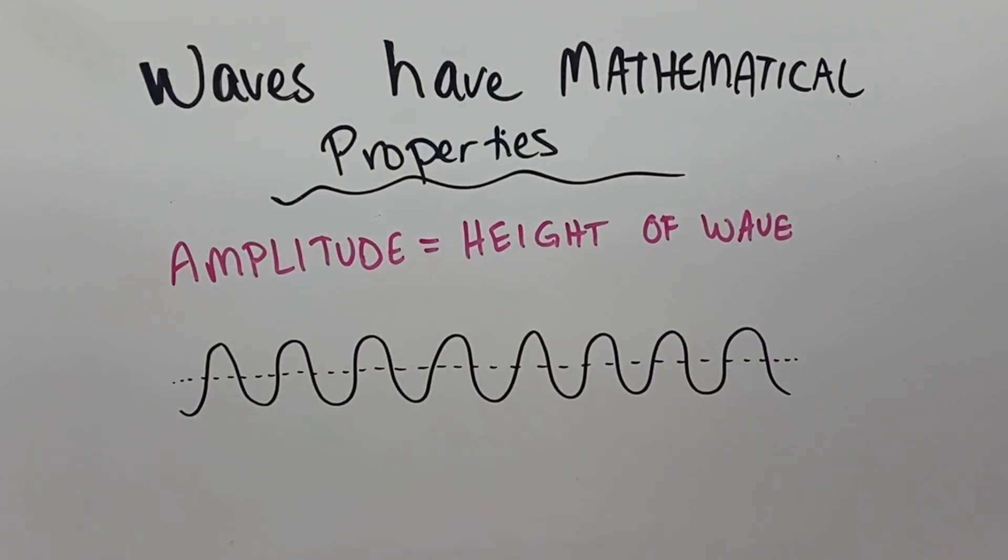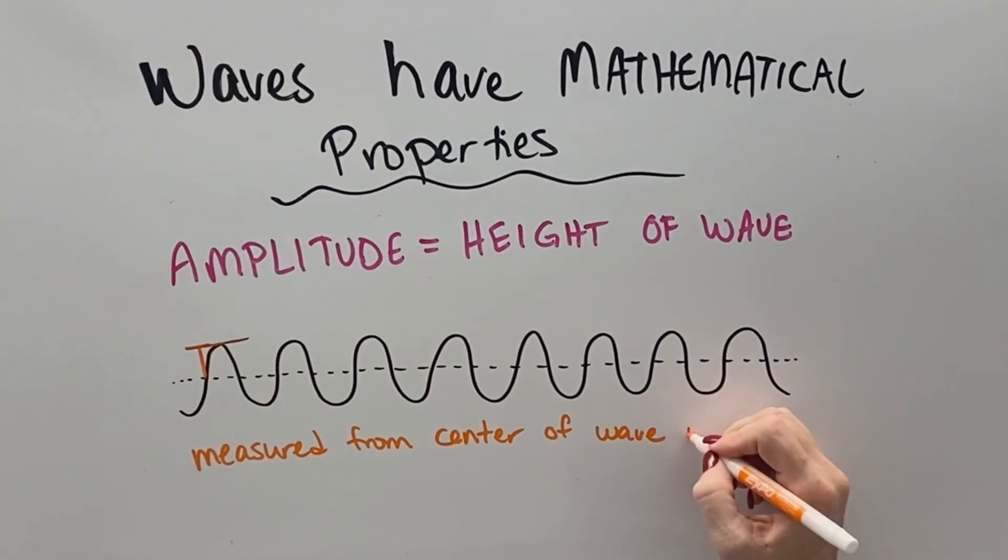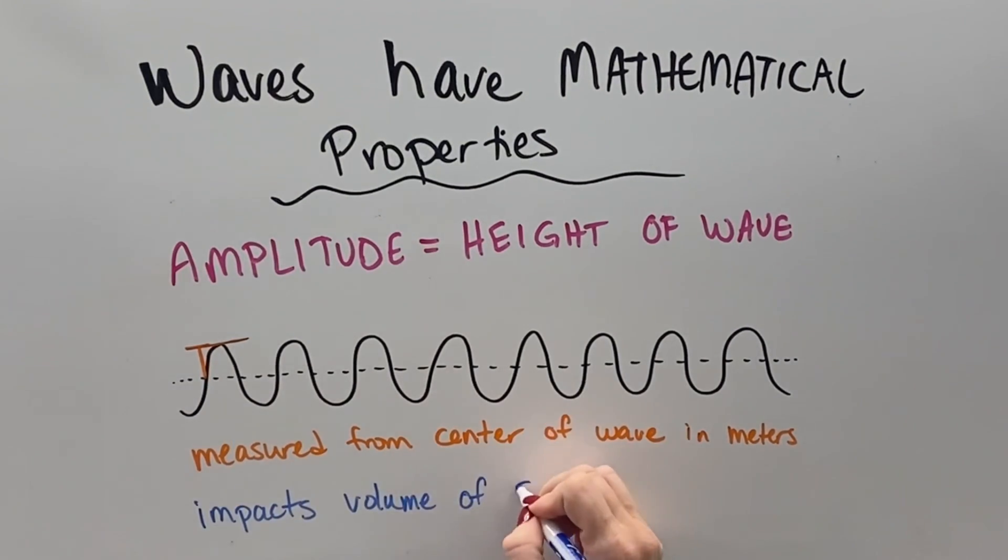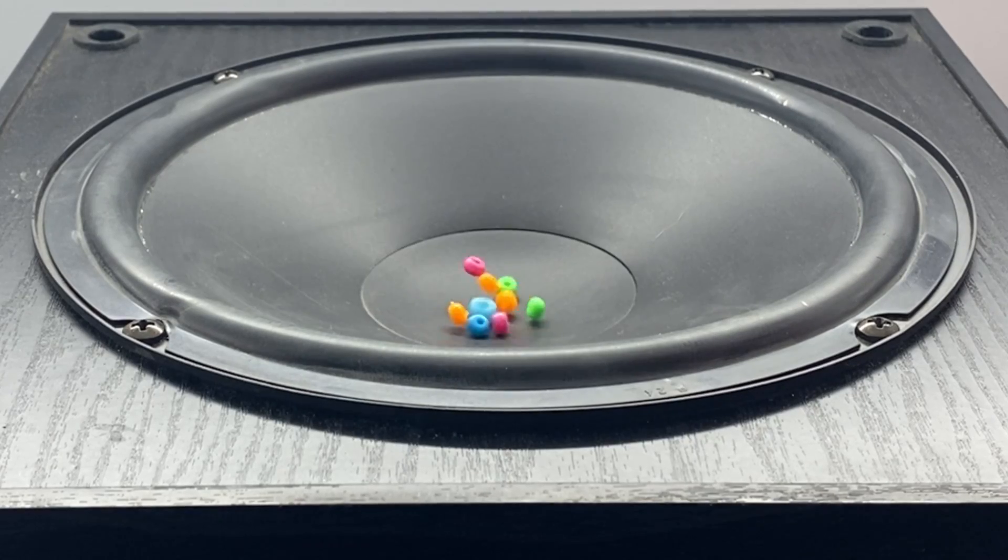Waves have mathematical properties. Amplitude is the height of the wave and it's measured from the center of the wave to the top. It can also be measured from the center of the wave to the bottom and it's measured in meters. This impacts the volume of a sound as a higher amplitude makes a louder sound.